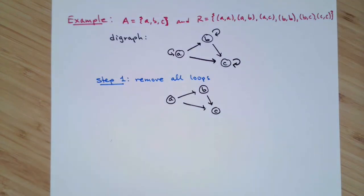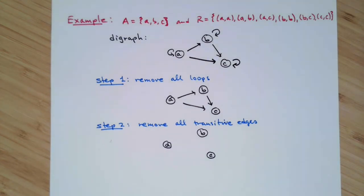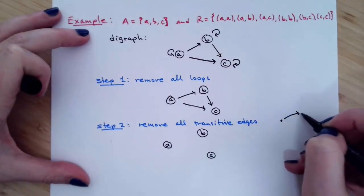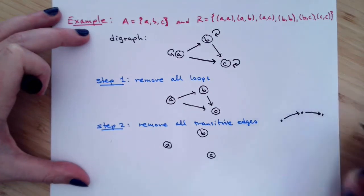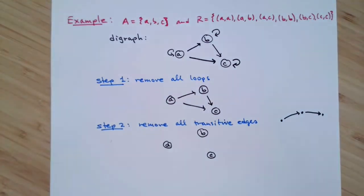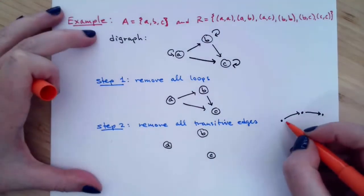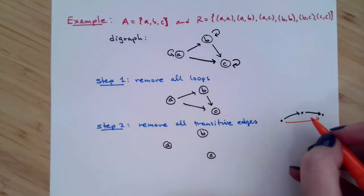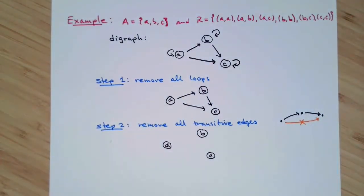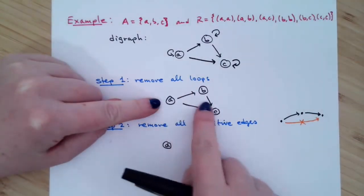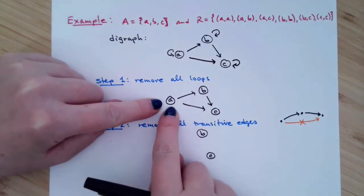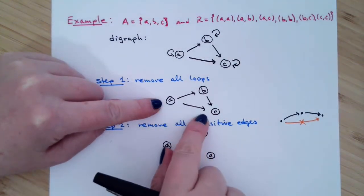The second thing we're going to do is we're going to remove all of our transitive edges. When we're thinking about removing our transitive edges, this is what we're looking for: we're looking for things where you've got a length-two path and the transitive edge, the edge we want to remove, is the shortcut. It goes from the beginning of your length-two path to the end of your length-two path. Well, when we look in our picture, we currently have three directed edges.